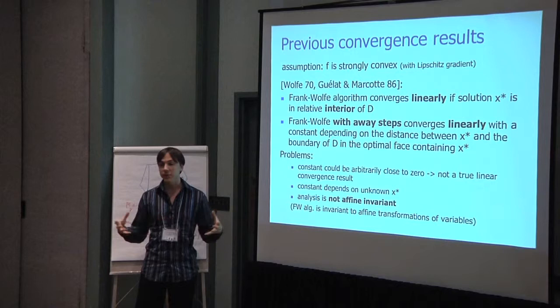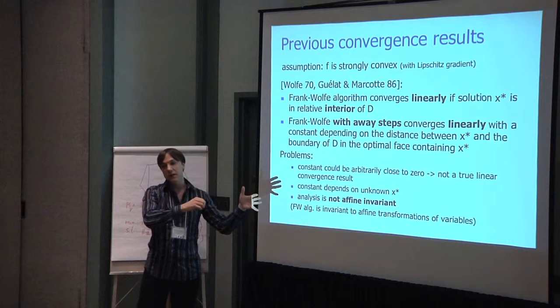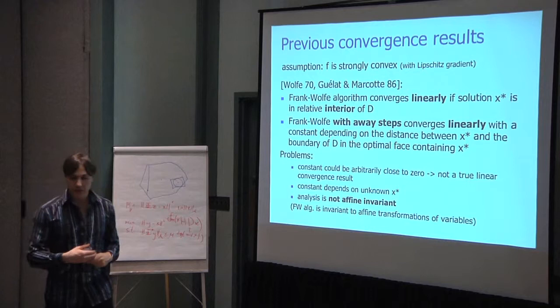So the constant could be arbitrarily close to zero, so it's not really a true linear convergence result. And the other one is that you actually cannot really compute this constant because it depends on the unknown X star. Another problem with this current analysis is that it's not affine invariant. The Frank-Wolfe algorithm is invariant when you change the domain by affine transformation. If you run Frank-Wolfe in the transformed domain, you will get the exact same iterates as in the original domain. So you would like your constant to not depend on those transformations.